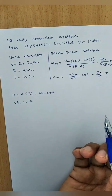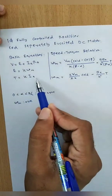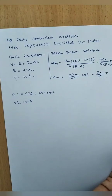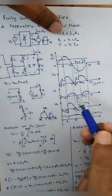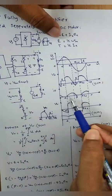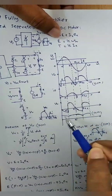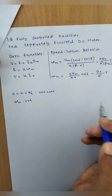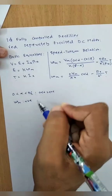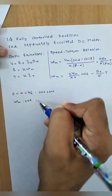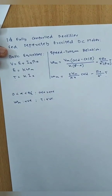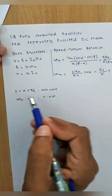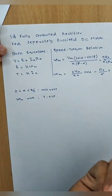Looking at torque: T = K × i_a, so the polarity of torque depends upon the polarity of i_a. In a controlled rectifier, both in continuous conduction mode and discontinuous conduction mode, i_0 is always positive. The average value i_a is always positive for any alpha. Since i_a is positive, torque is always positive.